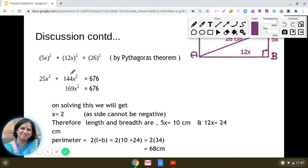So this is how we are able to frame this relationship between the sides and the diagonal. Now 5x whole square is 25x square and 12x whole square is 144x square. So we get the equation 25x square plus 144x square is equal to 676. So what is 25x square plus 144x square? We can combine these two terms and we get this as 169x square.